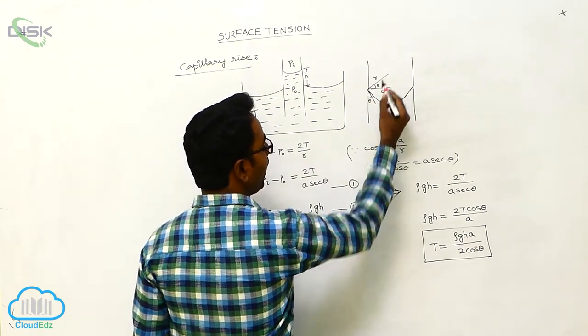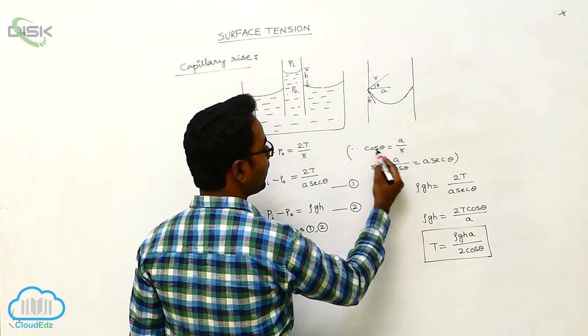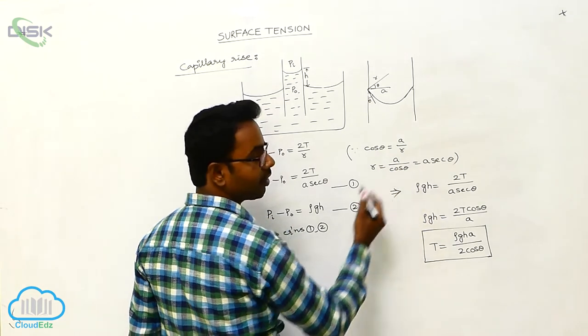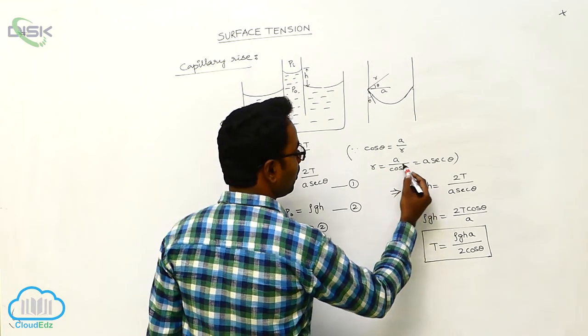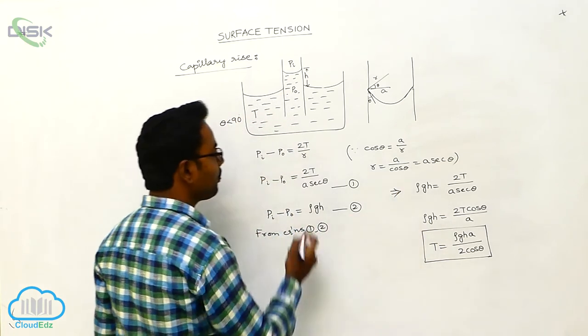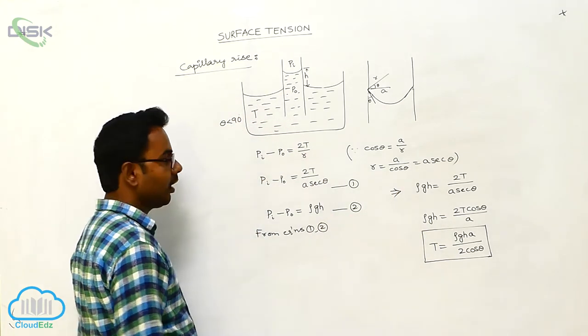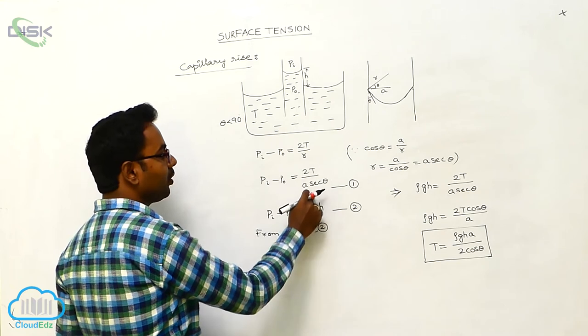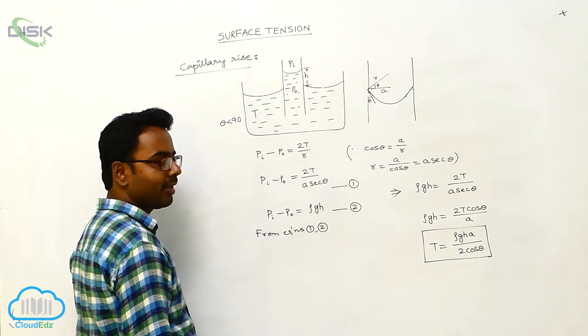Cos theta is equal to adjacent by hypotenuse, A by R. So R is equal to A by cos theta. 1 by cos theta is sec theta. A times sec theta equals R. Instead of R, we write A sec theta. Pi minus P0 is equal to 2T by A sec theta. Let it be equation number 1.